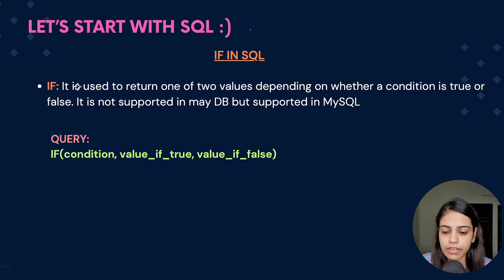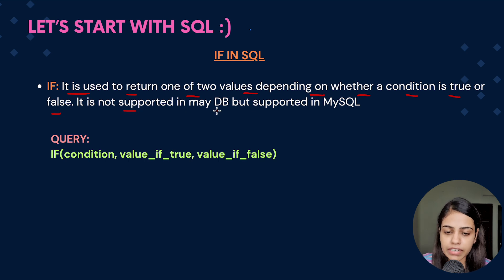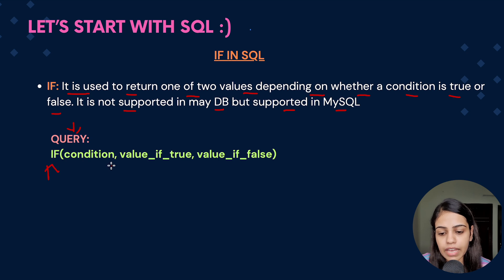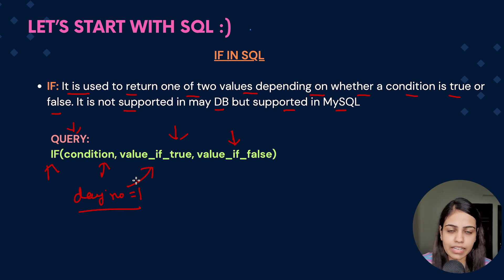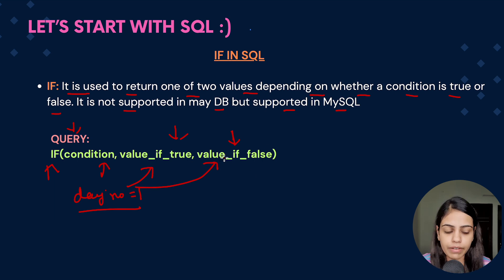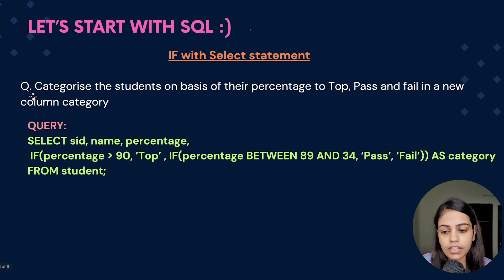Now let's look at IF. It is used to return one of two values depending on whether a condition is true or false. It is not supported in many databases but it is supported in MySQL. The syntax is: IF(condition, true_value, false_value). For example, IF(day_number = 1, true_value, false_value).